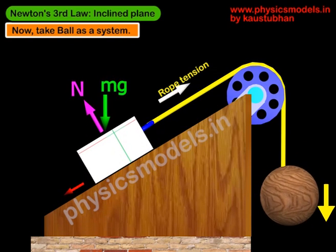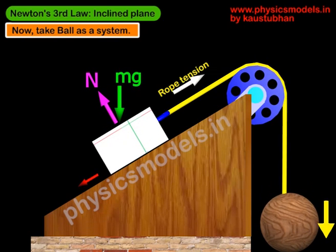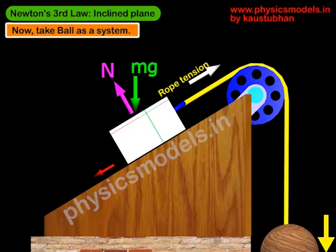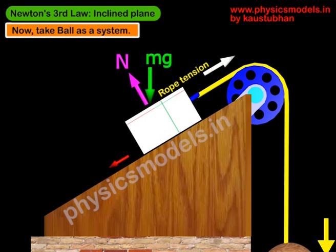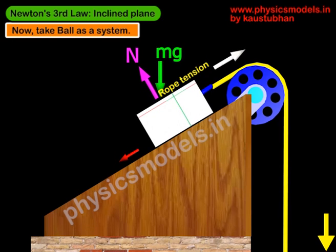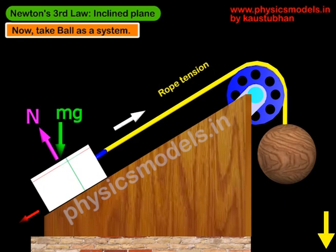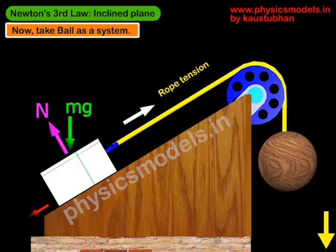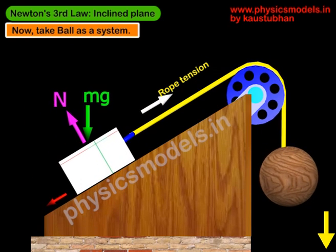So sometimes we have to use the first law, and when things start moving we have to find acceleration as per the second law — that's the trick. The first law takes care when things are at rest or in uniform motion. The second law takes care when things are moving and have an acceleration, and when there is a net force.